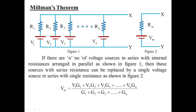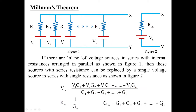How to find out Millman's voltage: it is given by V1·G1 plus V2·G2 plus V3·G3 plus Vn·Gn, divided by G1 plus G2 plus G3 so on till Gn. G is known as the conductance, which is the reciprocal of resistance, and the value of Gm can be obtained as Gm equals G1 plus G2 so on till Gn.